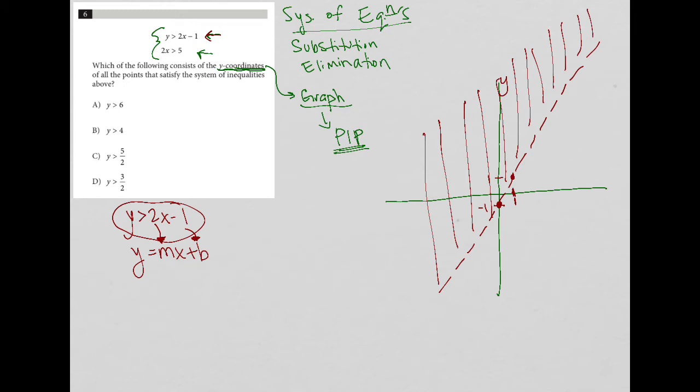Next, I'm going to graph 2x is greater than 5. That's not in slope-intercept form, so I'll isolate the x-value to get x is greater than 2.5. On my x-axis, I have 2 and 3, so 2.5 is here.